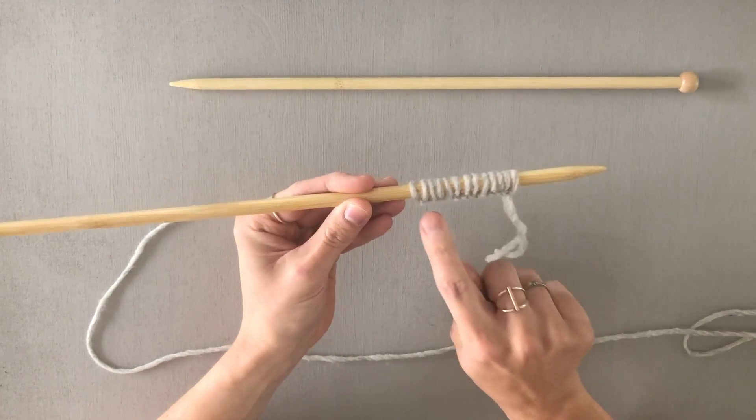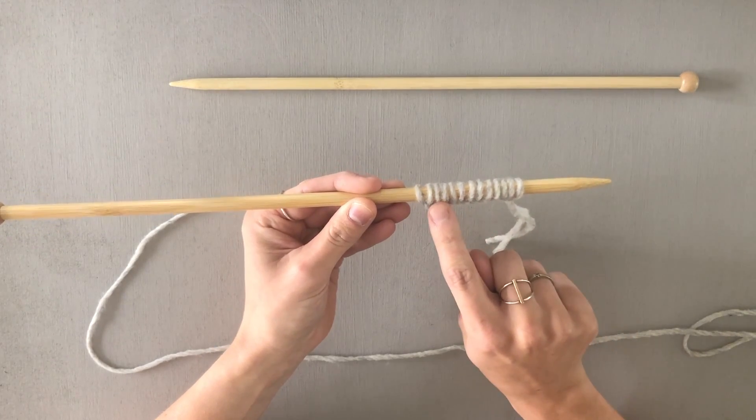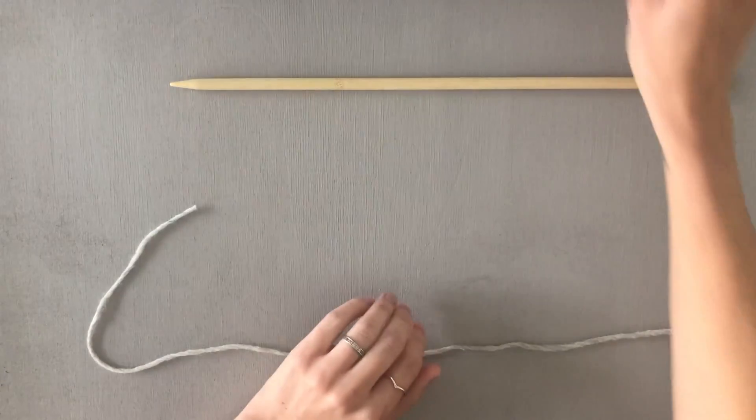On the back side you can see the little pearl bumps. If you ever want the pearl bumps on the right side of your work you'll use the long tail cast on purlwise, so let me show you how to do that.